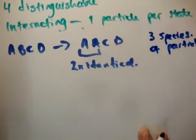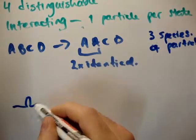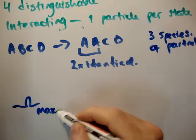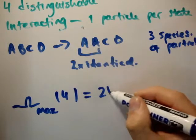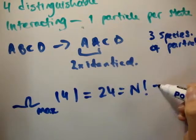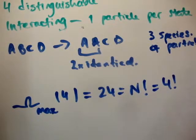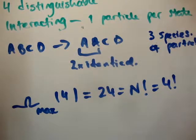Now, we know that the maximum multiplicity for 4 distinguishable particles is equal to 24, because it's equal to N factorial, which is equal to 4 factorial. But you should intuitively know that if we have particles starting to be identical, then we're going to have a smaller multiplicity.